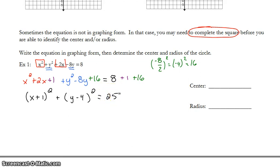I now have my equation in graphing form. I can find my center, x plus 1, means my x coordinate is negative 1, plus y minus 4, means my y coordinate is positive 4, and both of those are squared. The radius squared is 25, that makes the radius 5. At that point, I'd be able to go ahead and graph it.